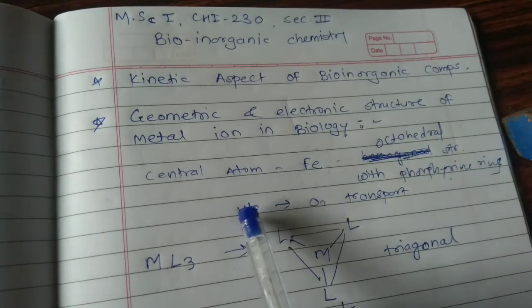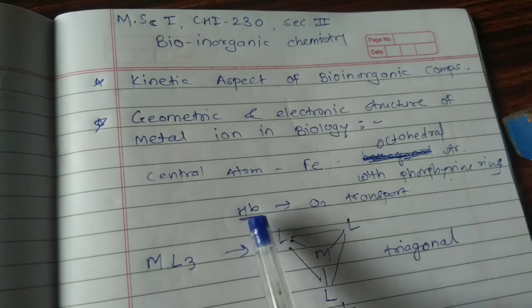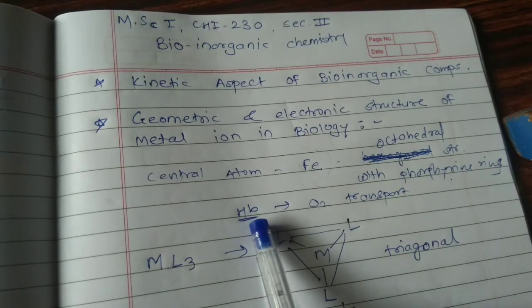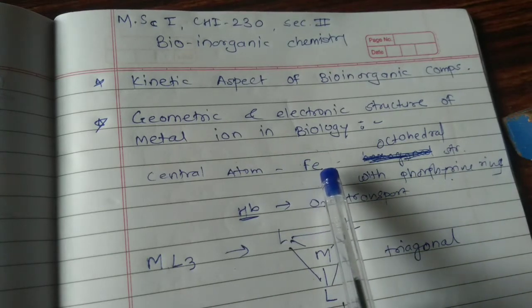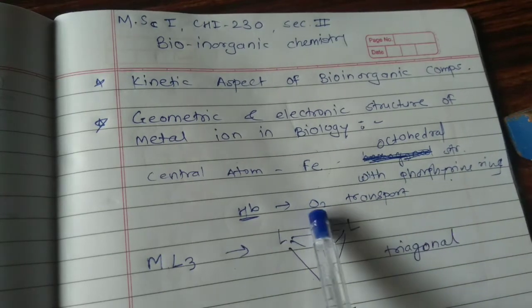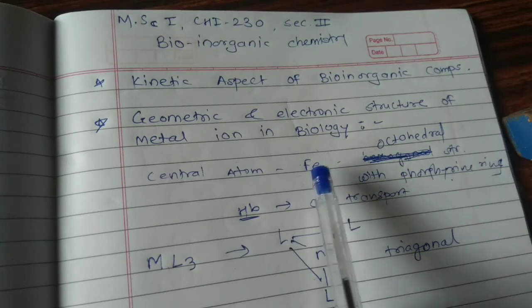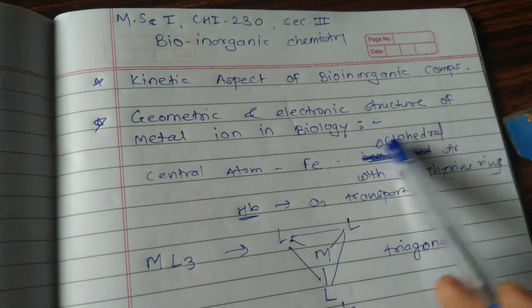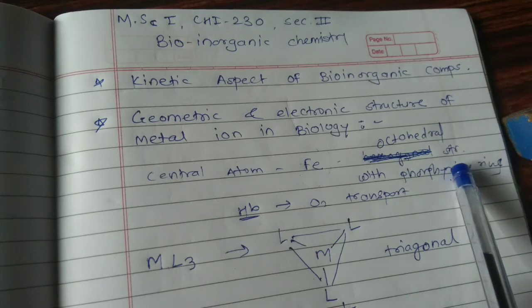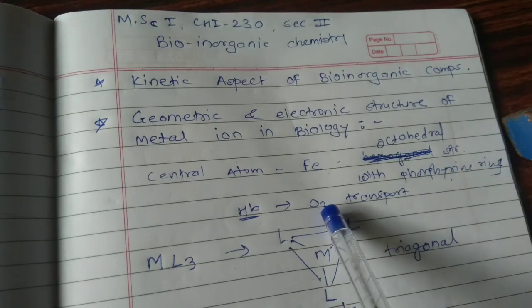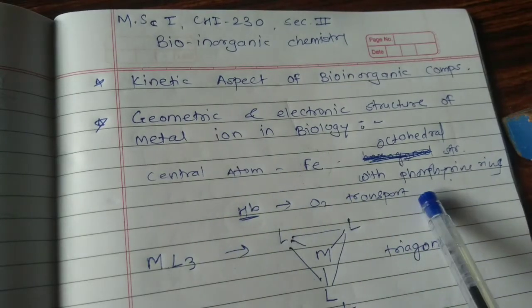For example, hemoglobin has the function of oxygen transfer. In case of hemoglobin, this is a bulky biomolecule. At the centre there is an Fe, and this Fe plays an important role in performing this oxygen transfer function. This Fe is responsible for the formation of the octahedral structure with the porphyrin ring. Due to this reason, oxygen can easily bind to hemoglobin and perform its function properly.